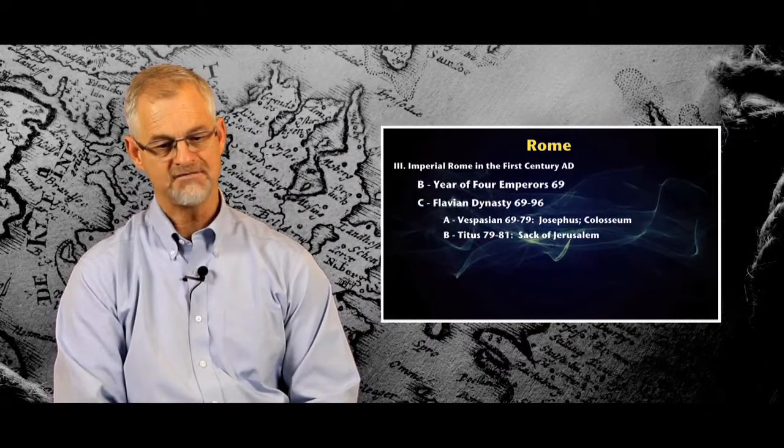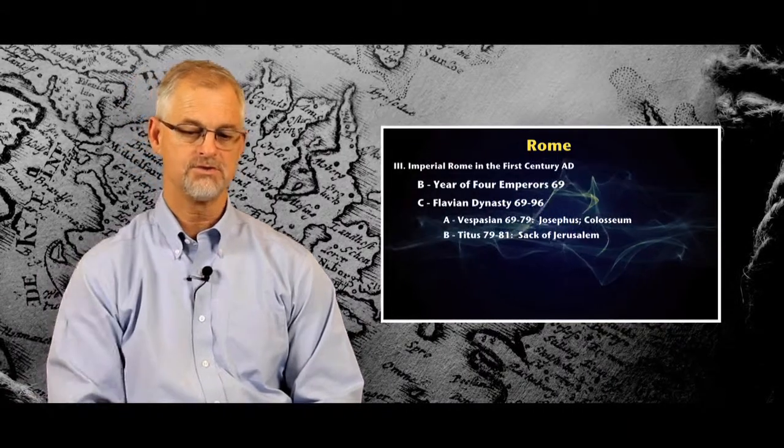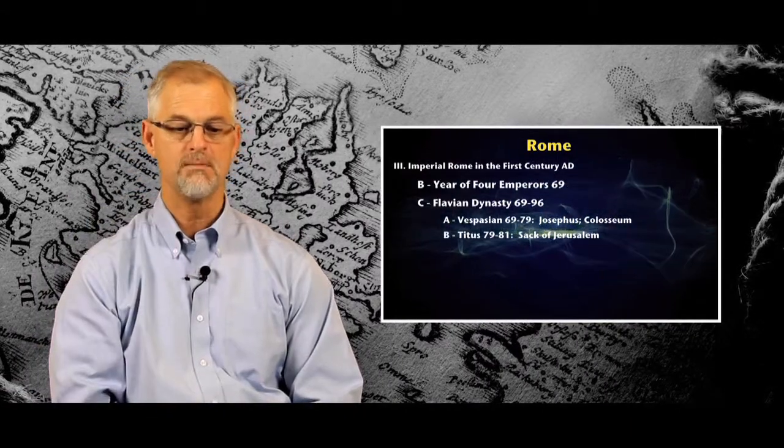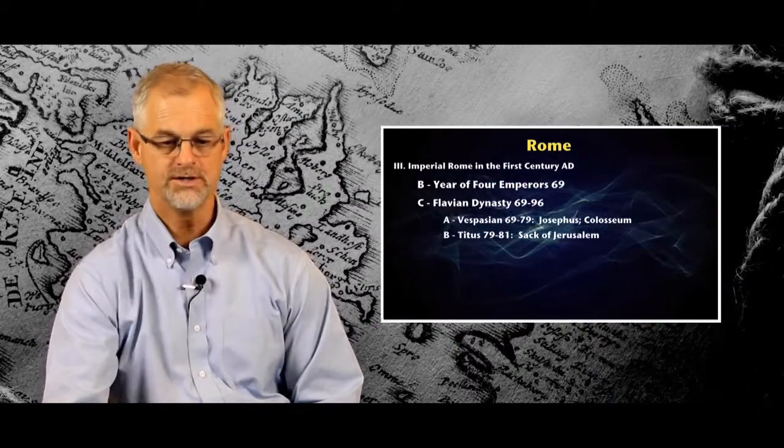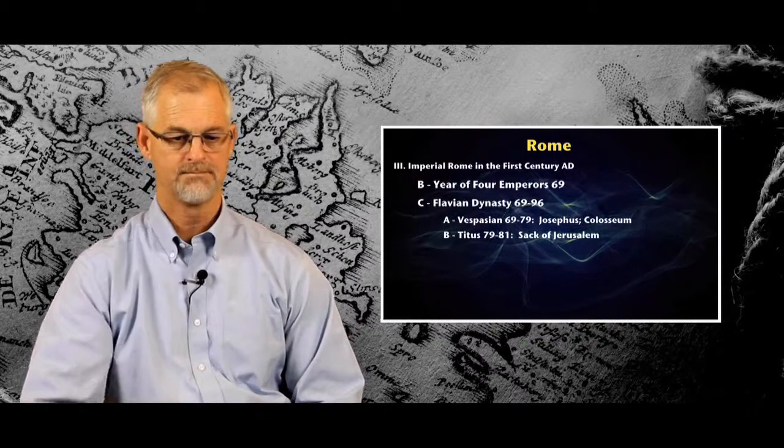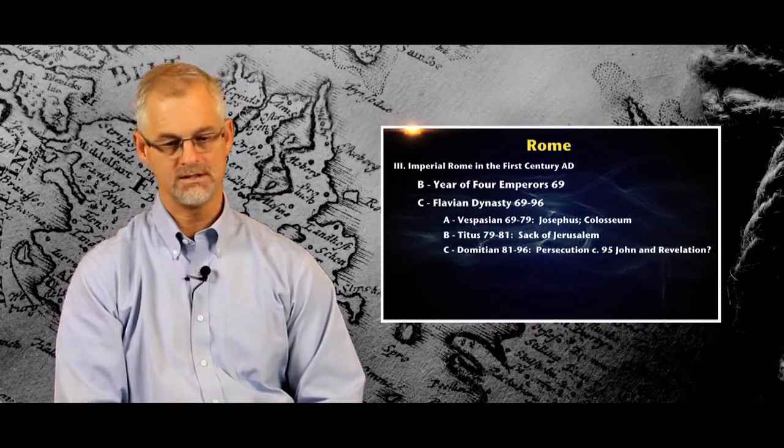Titus, thereafter, finished up with the Jewish revolt, went back home to Rome, eventually succeeded his father in 79, and ruled as emperor for two years, 79 to 81. He was succeeded by his brother Domitian, who ruled from 81 to 96.